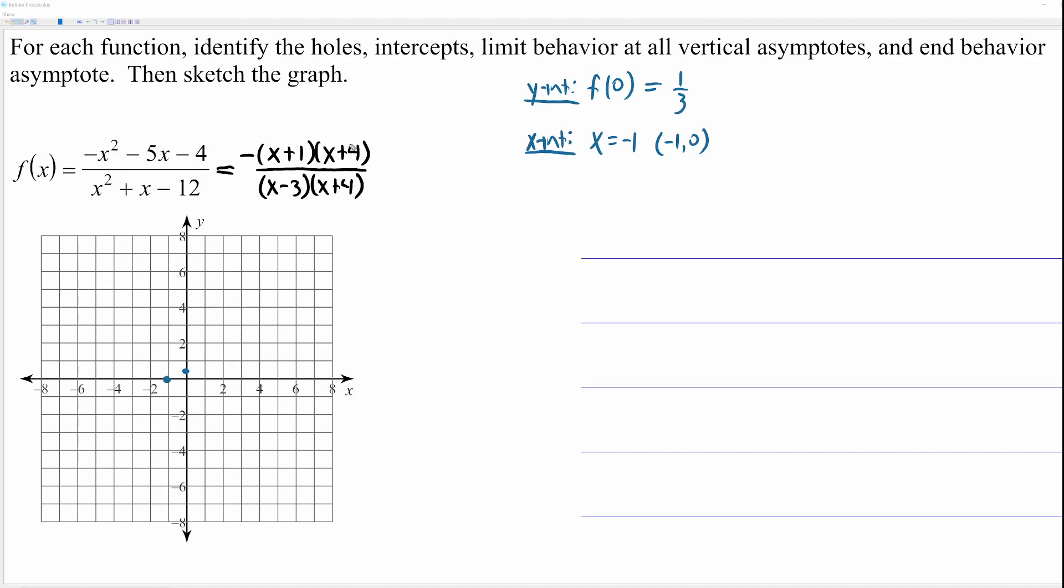Now, if you're thinking to yourself, well, do the same thing with this other factor, this is where this video has an additional feature. These factors cancel. So, you're not going to have an x-intercept at that point. You're also not going to have a vertical asymptote. And we'll get to that in a moment.